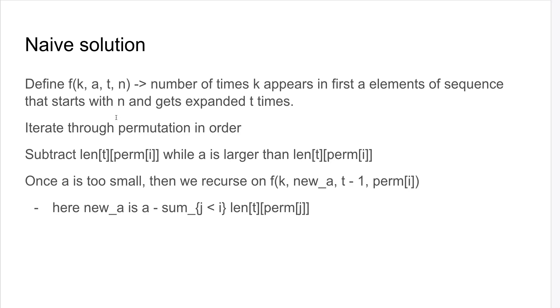One way we can do this is let's iterate through, repeat this t times and iterate through permutation in order. We subtract len[t][perm[i]] while a is bigger than the i-th value of the permutation. And once a is too small, we recurse on the smaller subproblem. So we reduce n, we also reduce t, and a also gets reduced.